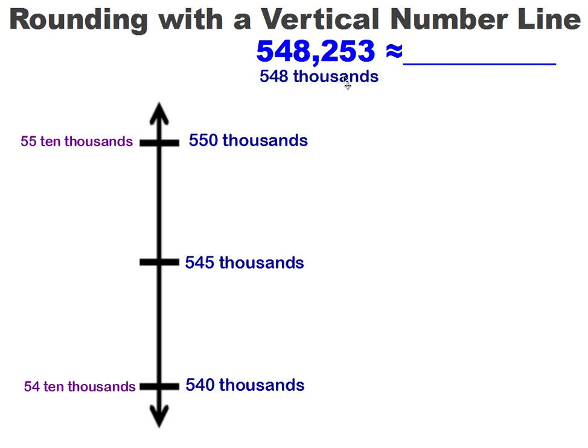Now I need to decide where I would put 548,000 on this number line. It would go about here. 548,000. So that's showing me that this number is closer to 55 ten thousands or 550 thousands. Much closer than it would be to 540,000 or 54 ten thousands. So I would round to this number. Now all I have to do is be able to write this number, which is the same as this number, in standard form.